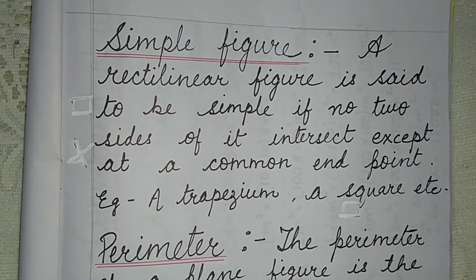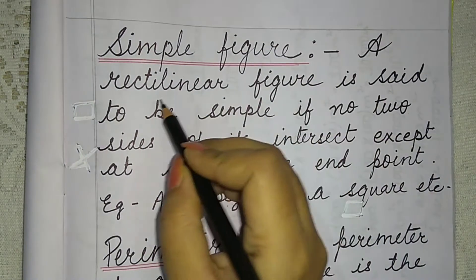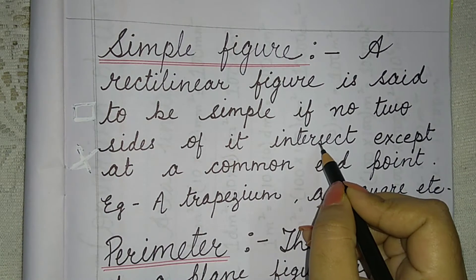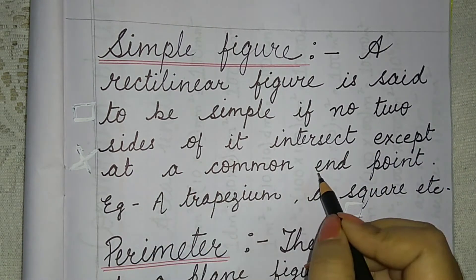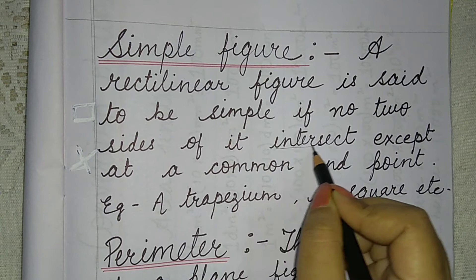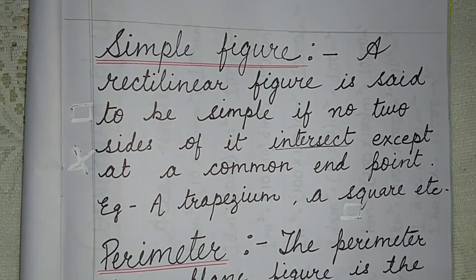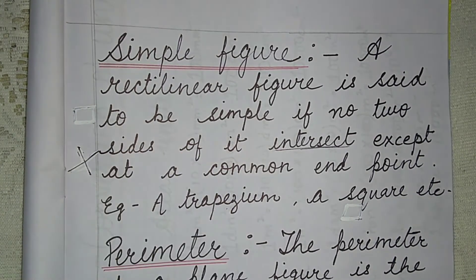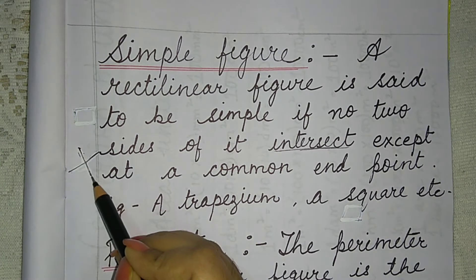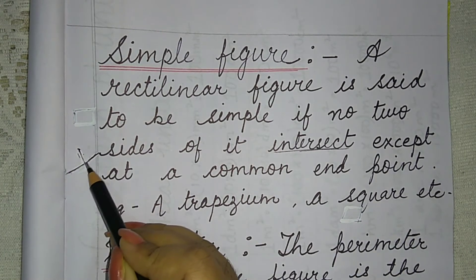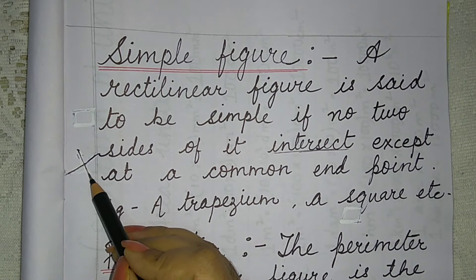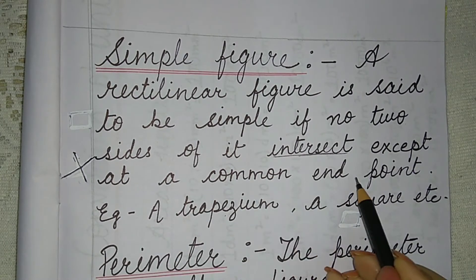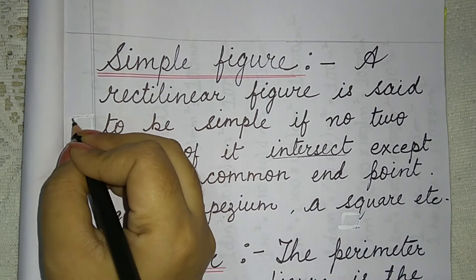Next comes to simple figure. What is a simple figure? A rectilinear figure is said to be simple if no two sides of it intersect except at a common end point. No two sides of it intersect. What do you mean by intersect? Intersect means one side crossing another side. Except at a common end point means what?